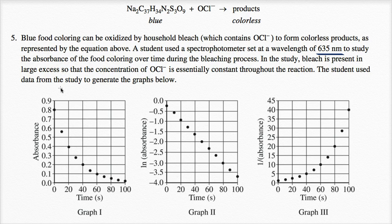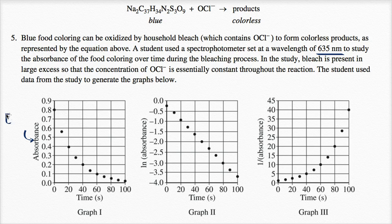The student used data from the study to generate graphs. The vertical axis shows absorbance, which can be viewed as a proxy for the concentration of food coloring — high concentration gives high absorbance and low concentration gives low absorbance. They plotted absorbance versus time, the natural log of absorbance versus time, and one over absorbance versus time.